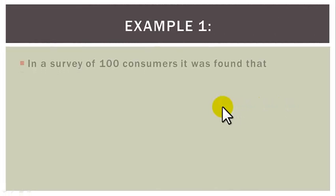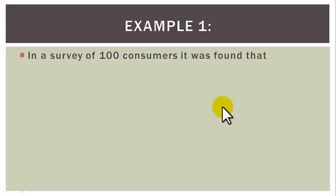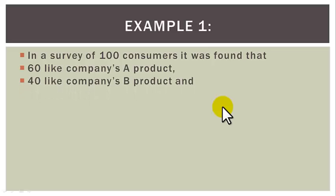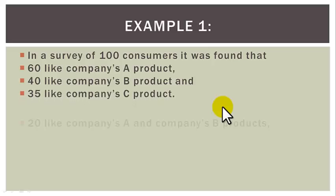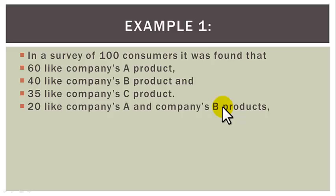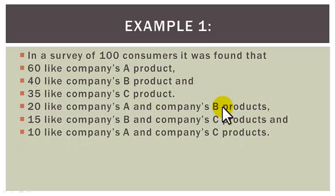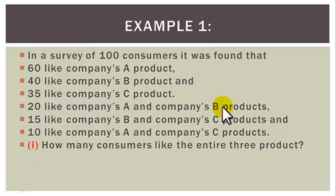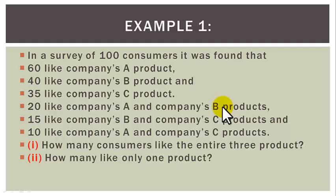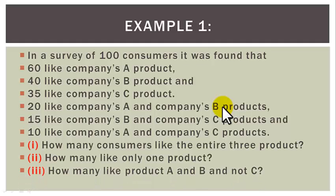Example 1: In a survey of 100 consumers, it was found that 60 like Company A's product, 40 like Company B's product, and 35 like Company C's product. 20 like A and B, 15 like B and C, 10 like A and C. Questions: (1) How many like all three? (2) How many like only one product? (3) How many like product A and B but not C?